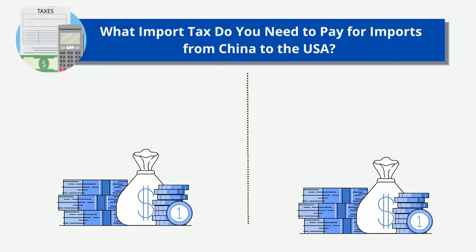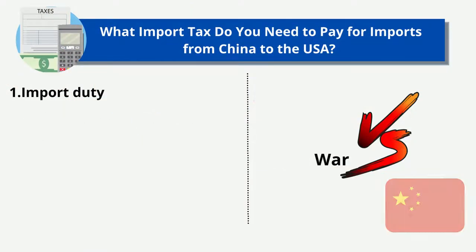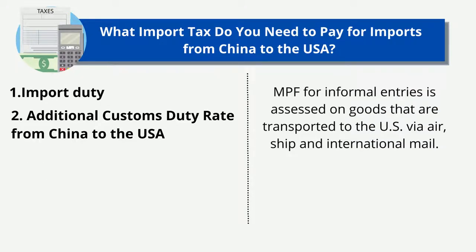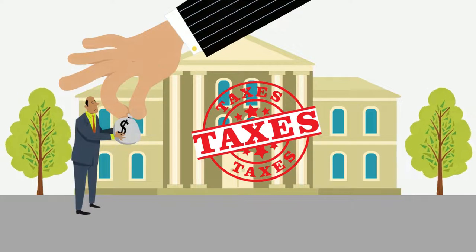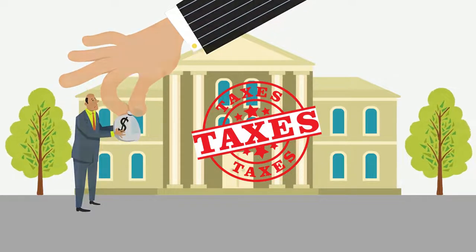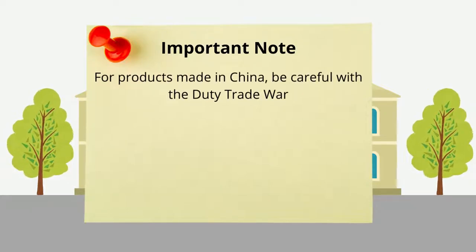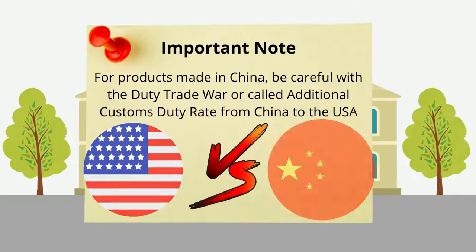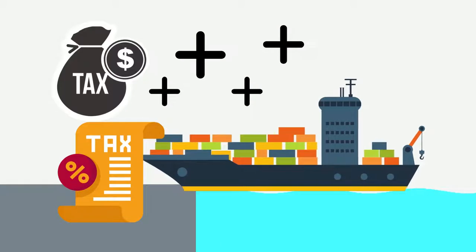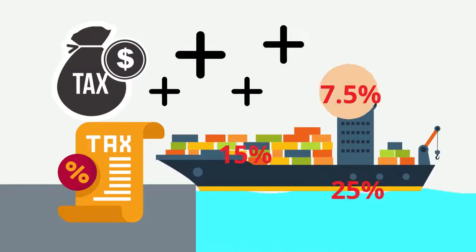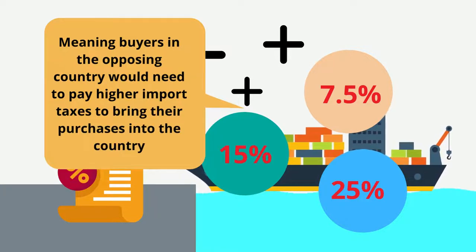What import tax do you need to pay for imports from China to the USA? Import duty, additional customs duty rate from China to the USA, merchandising processing fee (MPF), harbor maintenance fee (HMF), and federal excise tax. Import duties and taxes are imposed to protect national revenue, safeguard local industry, and most importantly protect domestic companies. For products made in China, be careful with the duty trade war — additional customs duty rates. The trade war between the US and China started in July 2018. The US and China imposed additional tariffs on goods from the other country — it can be 7.5%, 15%, or 25%.